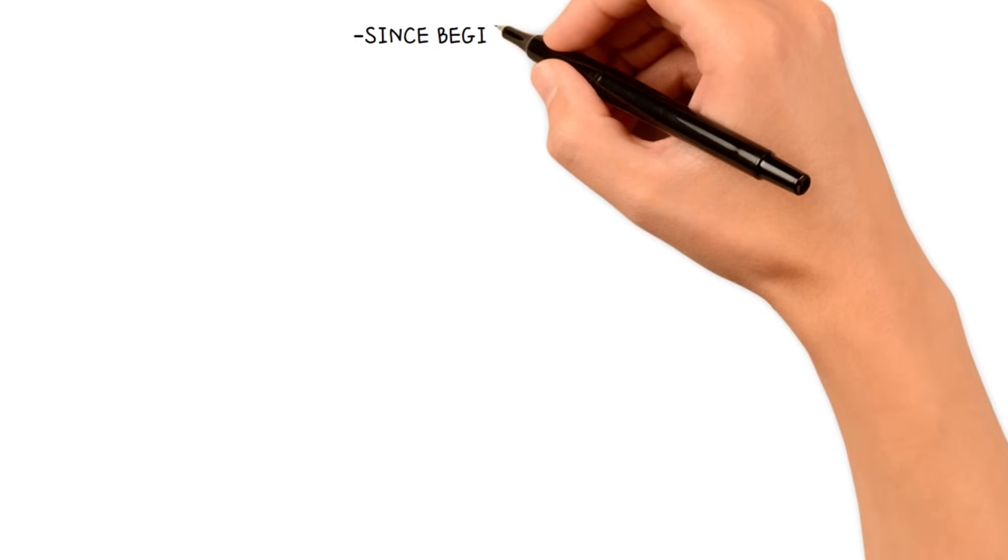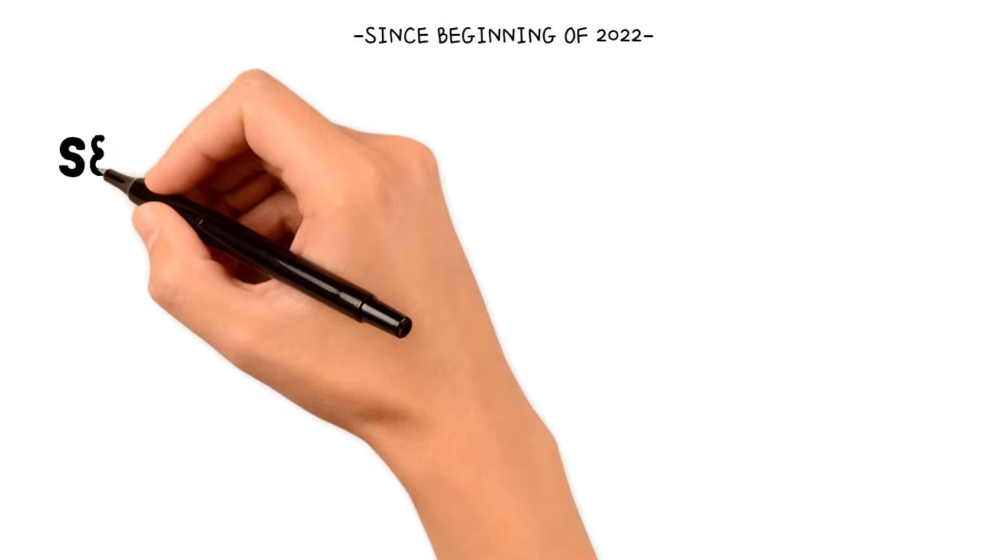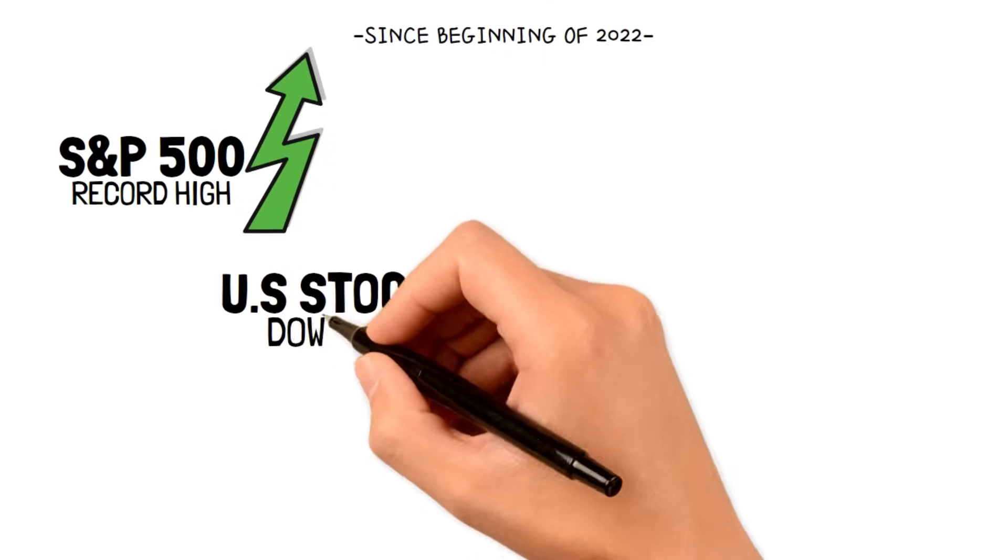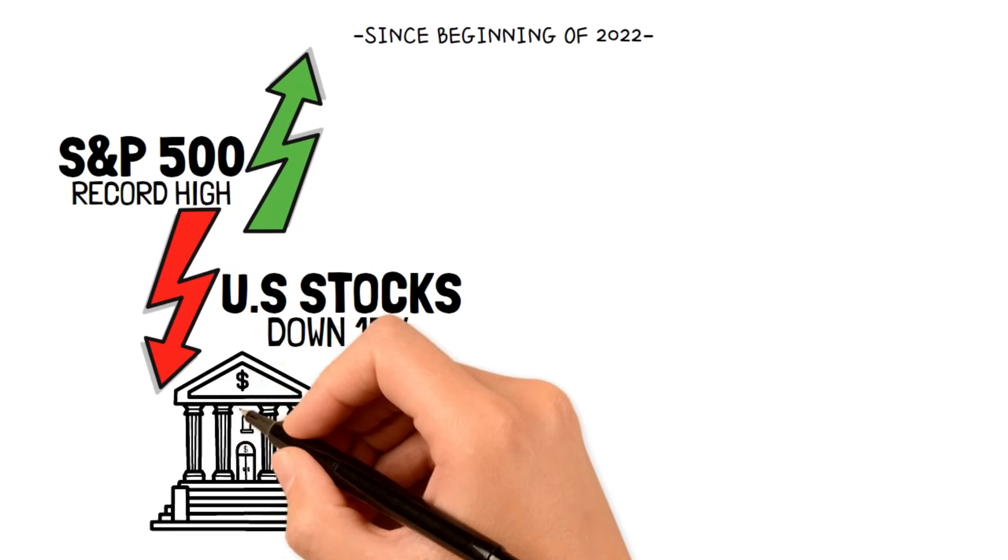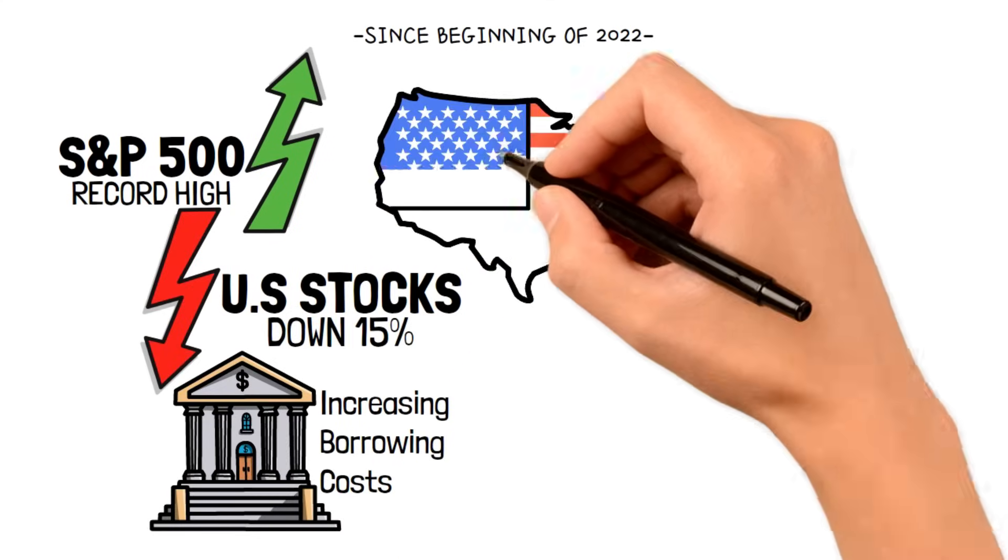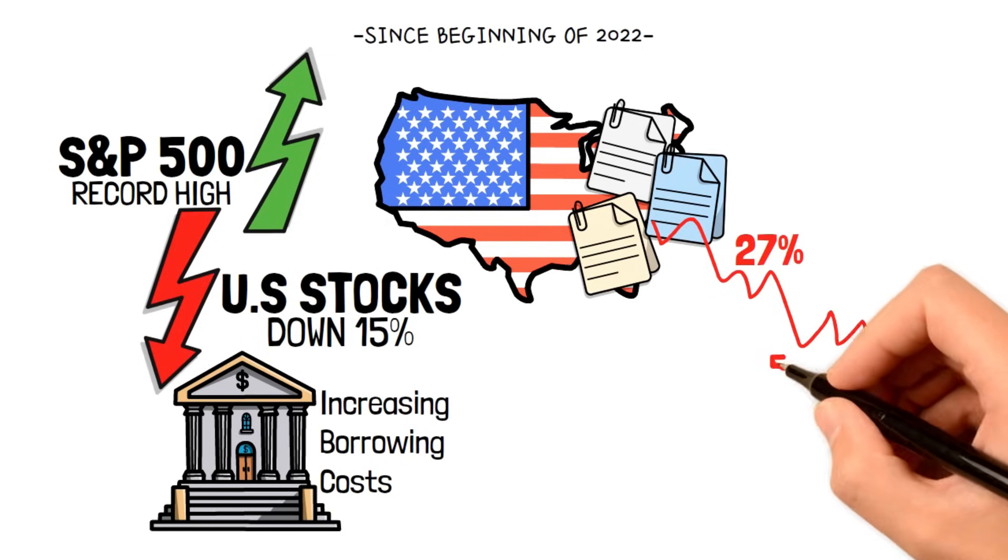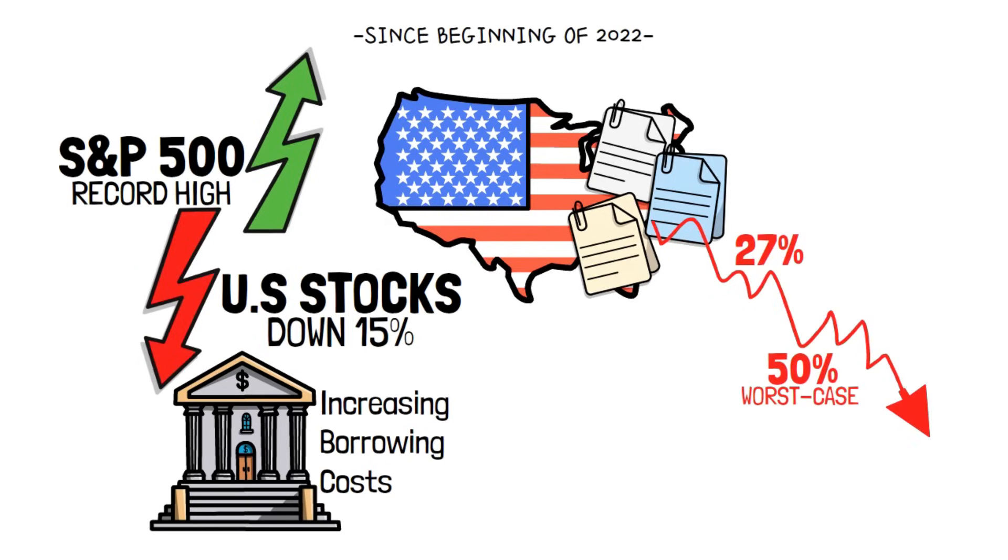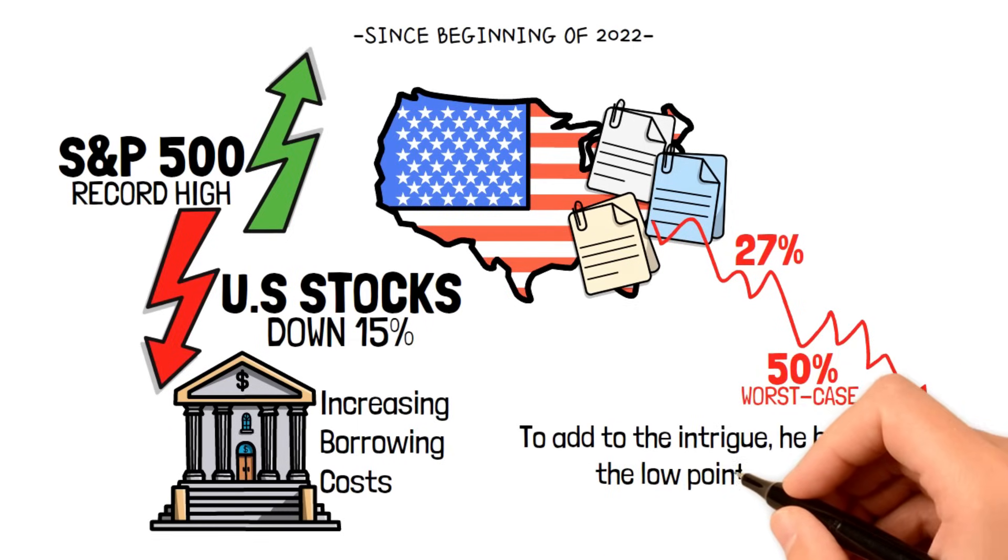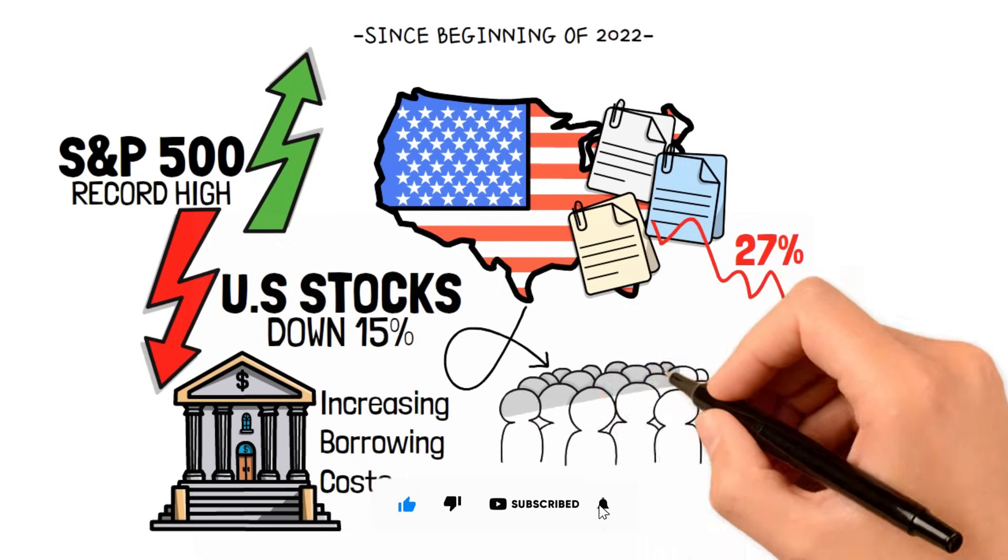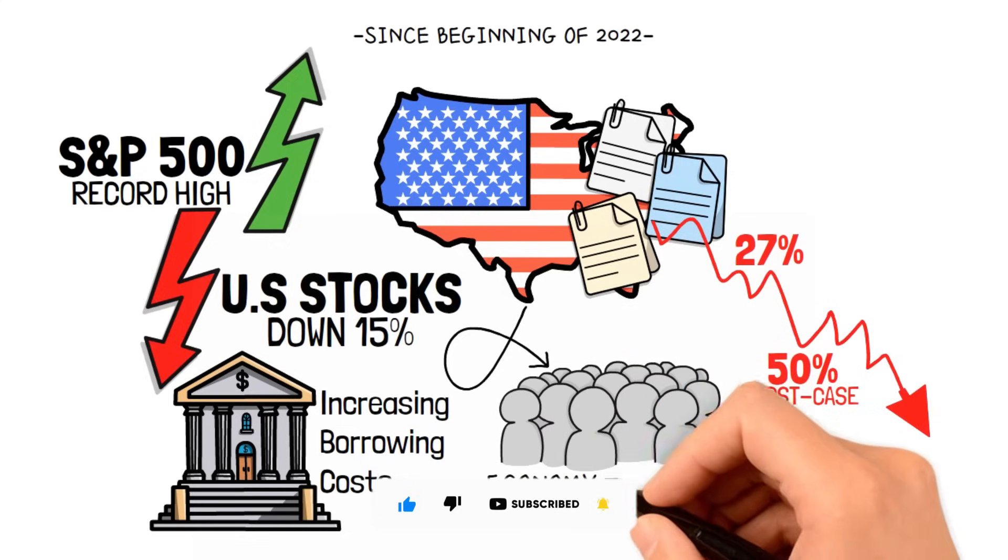However, if you thought that was bad enough, Grantham's view is way worse. Since the beginning of 2022, when the S&P 500 reached a record high, U.S. stocks declined by approximately 15% in the first quarter of the year due to central banks increasing borrowing costs. And Grantham believes the best we could hope for is a fall of about 27%, with a worst-case scenario seeing a plunge deeper than 50%. To add to the intrigue, he believes the low point might not even arrive until deep into next year. Regardless of how bad the crash eventually becomes, these forecasts emphasize the gravity of a potential crash and the economic challenges that lie ahead.